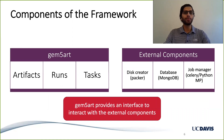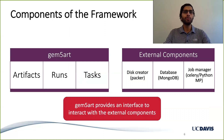There are three main components of Gem5Art: artifacts, runs, and tasks. Artifacts are the components involved in any experiment — for example, the Gem5 binary, Gem5 source repo, and the benchmarks. Gem5Art relies on different attributes of an artifact like hash, a UUID, name, and type to maintain a unique identity of the artifact across the timeline when an experiment is running. These artifacts are also stored in a database.